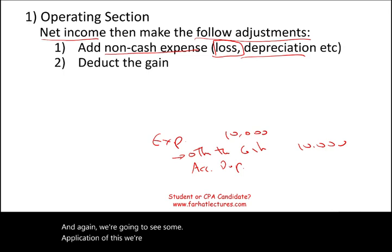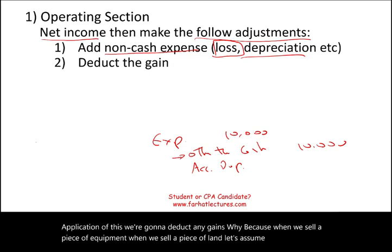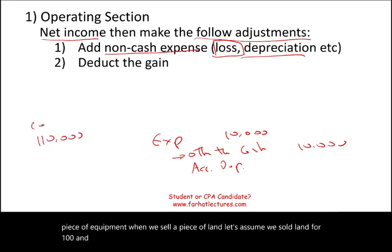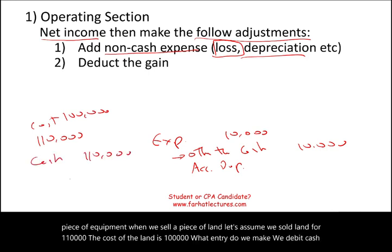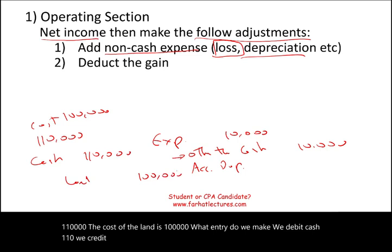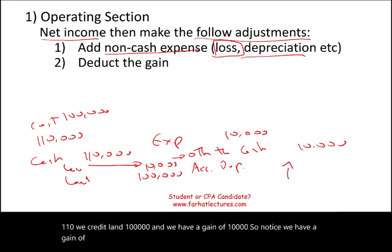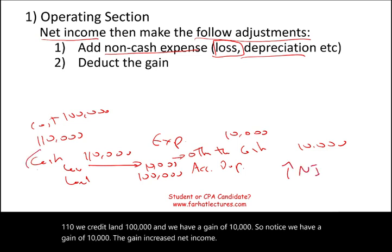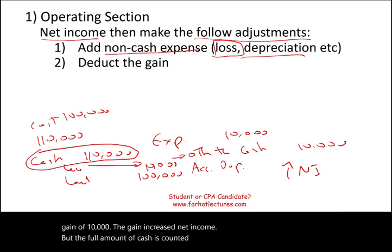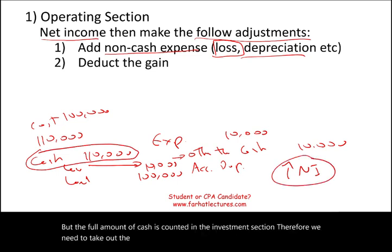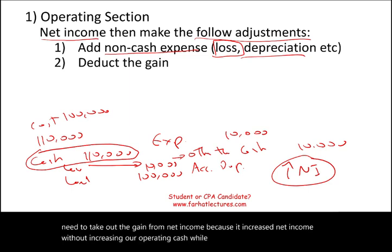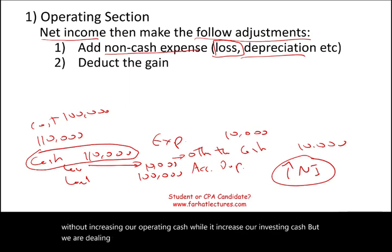We're going to deduct any gains. When we sell a piece of equipment or land — for example, we sold land for $110,000 with a cost of $100,000 — we debit cash $110,000, credit land $100,000, and record a gain of $10,000. That gain increased net income, but the full cash amount is counted in the investing section. Therefore, we need to take out the gain from net income because it increased net income without increasing our operating cash — it increased investing cash. Therefore, we deduct the gain.